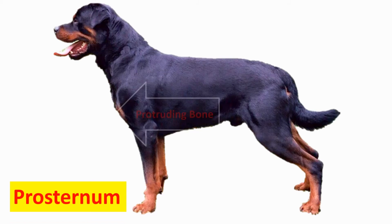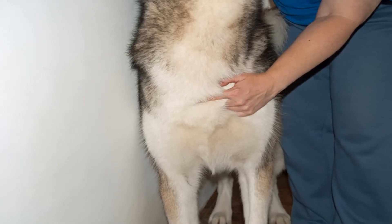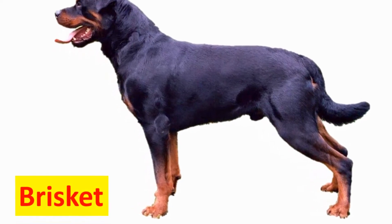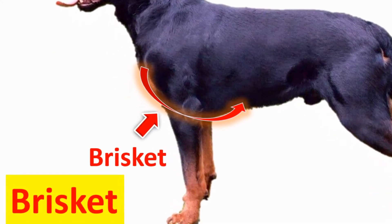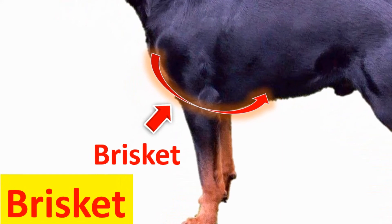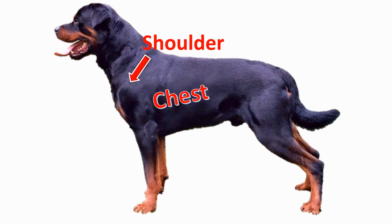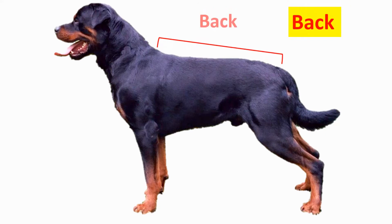Prosternum — the prosternum is the top of the sternum that can be seen as a projection at the upper center of the ribcage in the fore chest. Brisket — the brisket, or sternum, is the lower curved outline of the chest. The shoulder is right here, the chest is right here, and this portion is the back.